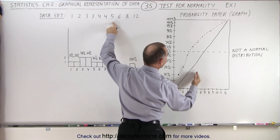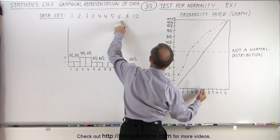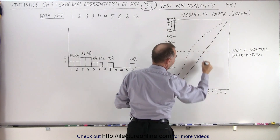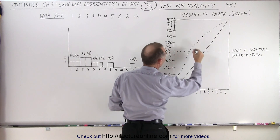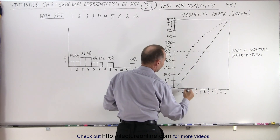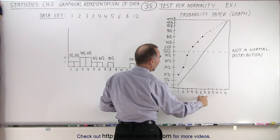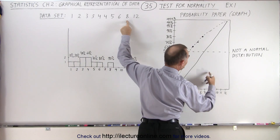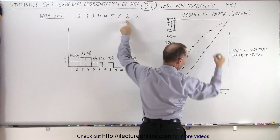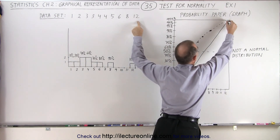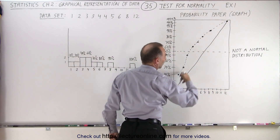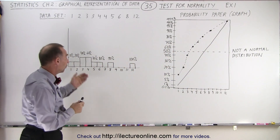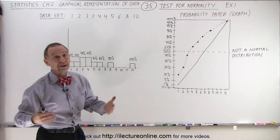By the time I include the number 5, I have 70% of the data. Including the number 6 gives me 80%. So you can see that you draw dots corresponding to 80% for the number 6, 70% for the number 5, 60% for number 4, 40% for number 3, 20% for number 2, and 10% for number 1. For the number 8, that's 9 points out of 10, so I'm at the 90th percentile. And finally, when I get to 12, I'm at 100%. I then draw a line connecting those dots, and if they don't fall close to the diagonal line, I do not have a normal distribution — which, of course, we already knew. This is what it looks like when there is not a normal distribution.